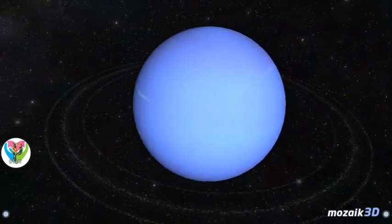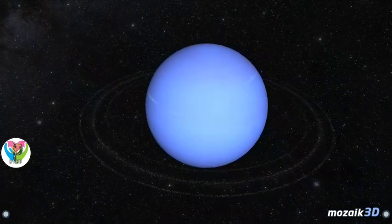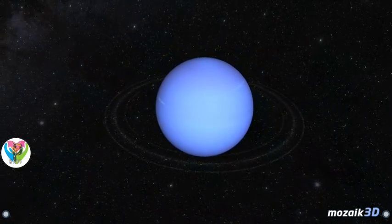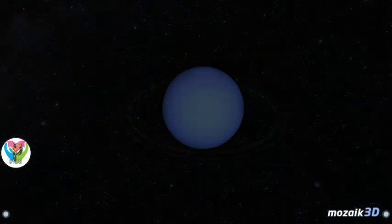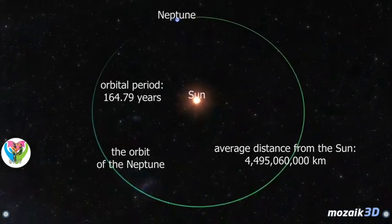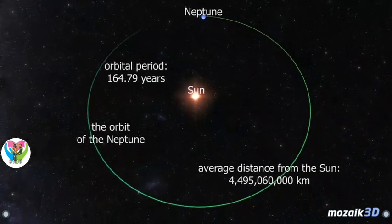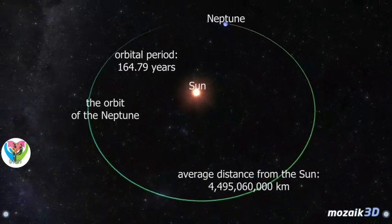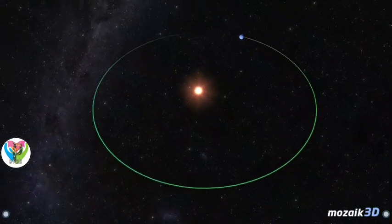Its density is greater than that of the other gas giants, at 1.64 grams per cubic centimeter. Its orbital period is 164.79 years, so it has only completed one orbit since its discovery.